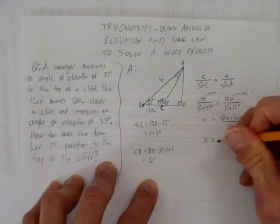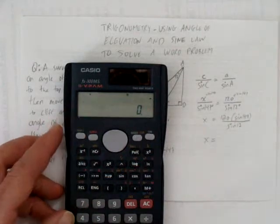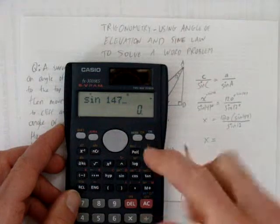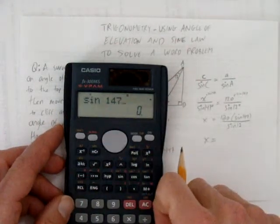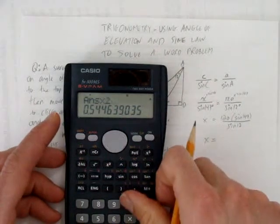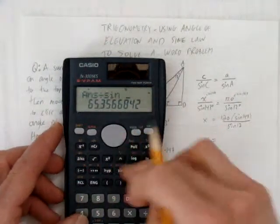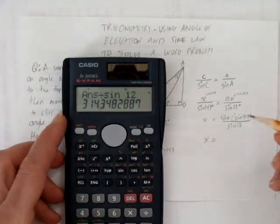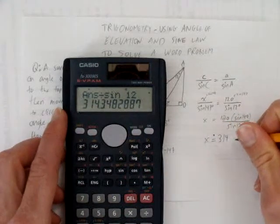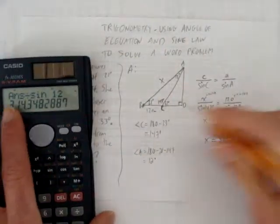Now I'm going to solve using my calculator. I'll do it all at once. So let's do sine of 147 on top. Make sure your calculator is in degrees. Equals, times that by 120. And now divide that by the sine of 12 degrees. And we get x is approximately, let's round to three decimals, 314.348. And the units in this question are in meters.